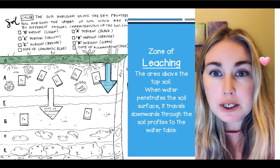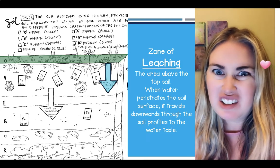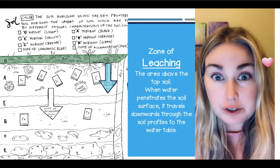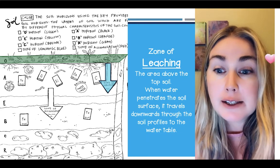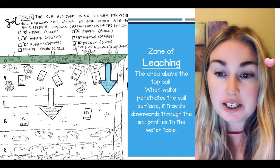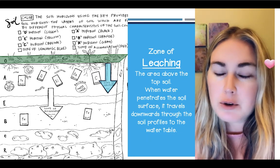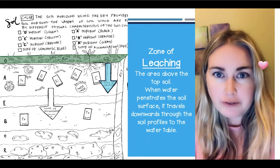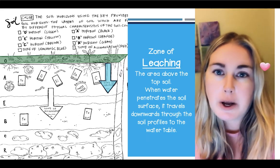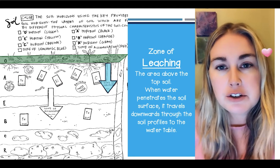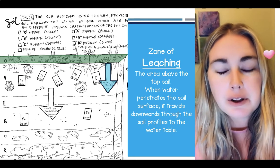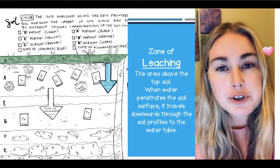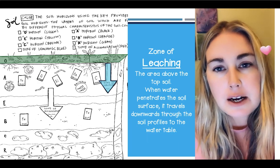On your paper, there is an arrow — you're going to color it blue. It says zone of leaching. The zone of leaching is what happens when water starts to permeate and drip down through the soil, and as it does, it starts to remove some of the nutrients and takes those nutrients down with it.